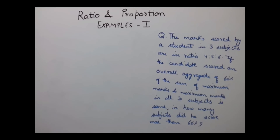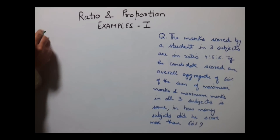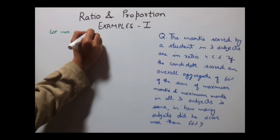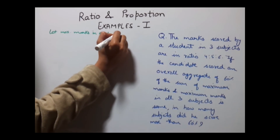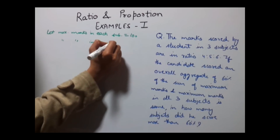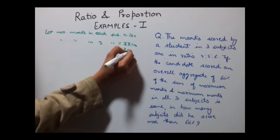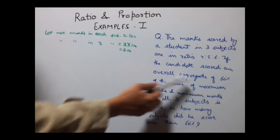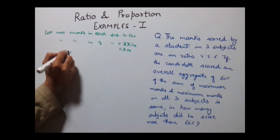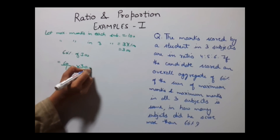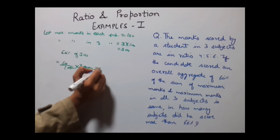To solve this, we first need to find the maximum marks. Let's suppose that maximum marks in each subject is 100. So maximum marks in three subjects would be 3 × 100 = 300. It is given that he scored an overall aggregate of 60% of the maximum marks. So 60% of 300 = (60/100) × 300 = 180.